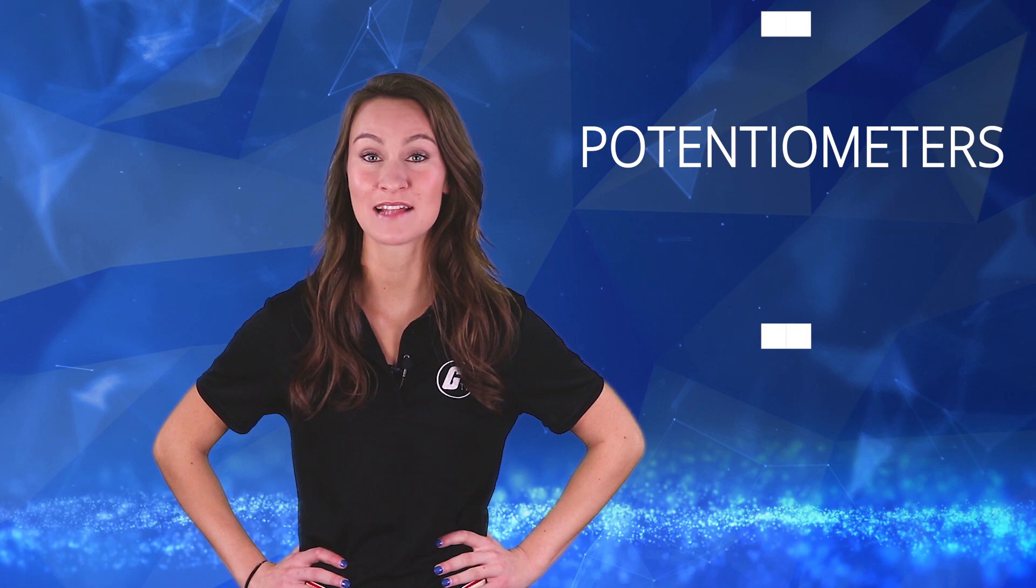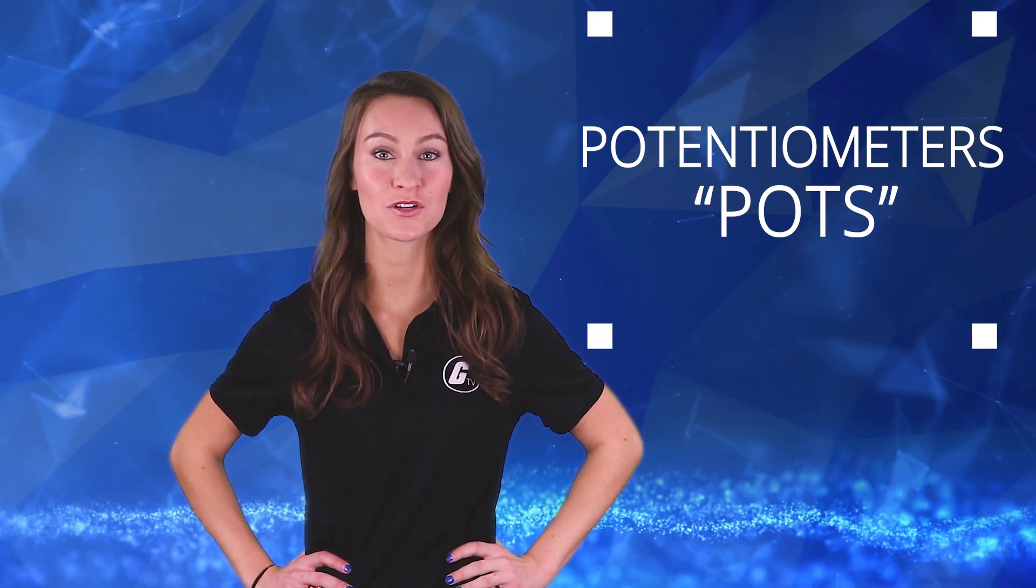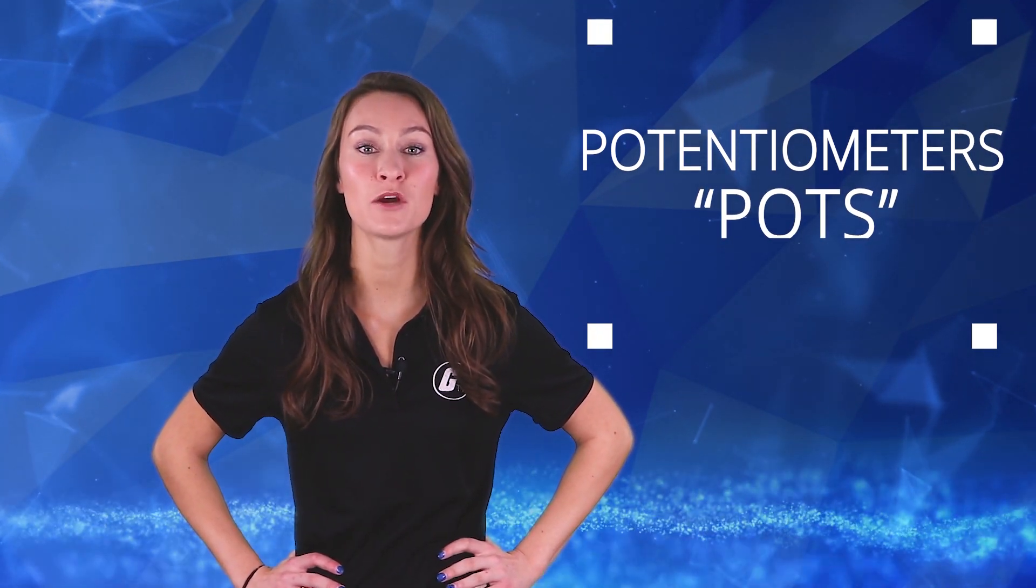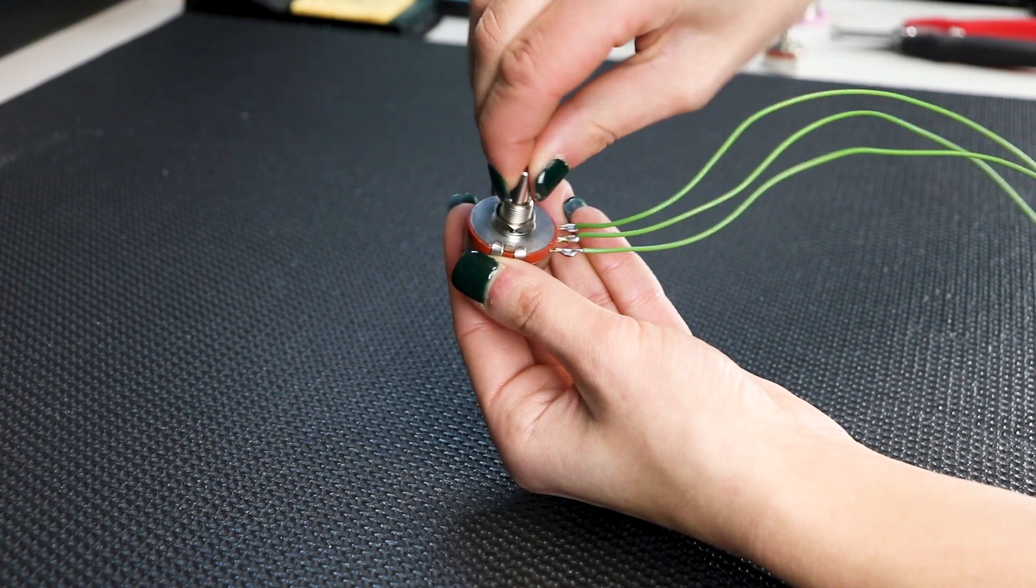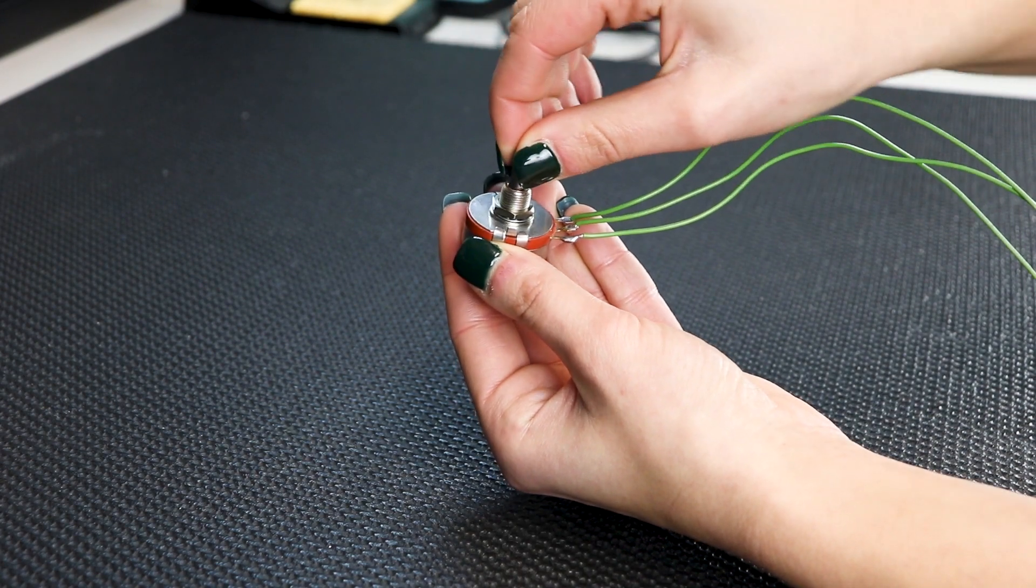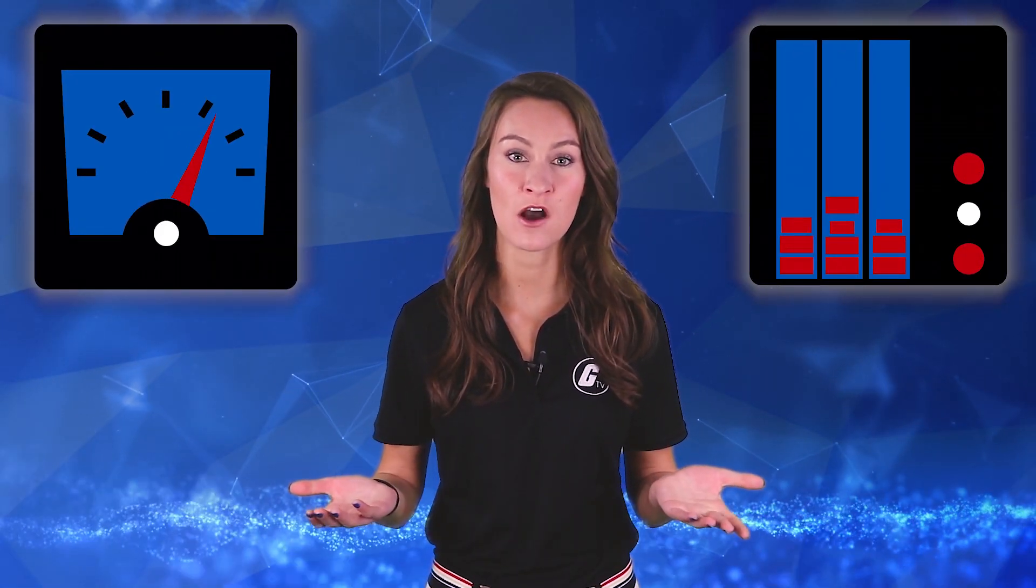Potentiometers, also called pots, are a type of electrical component known as a variable resistor, typically in conjunction with a knob. When the knob is turned, the rotational motion is translated into a change in resistance in the electrical circuit, which is then used to adjust the electrical signal, such as volume in an audio signal.